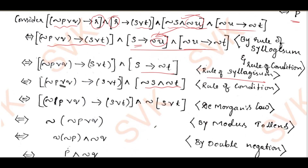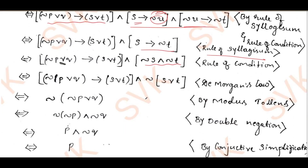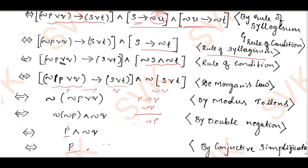From this I will apply Modus Tollens. Modus Tollens rule says: p implies q, negation q, finally gives negation p. By using Modus Tollens, considering the total proposition as p and this proposition as q, we get negation q, giving p implies q conjunction negation q, which equals negation of negation p disjunction q. Applying De Morgan's law, negation of negation p disjunction becomes conjunction negation q; negation of negation p is p. By conjunctive simplification, I can finally write this as p.